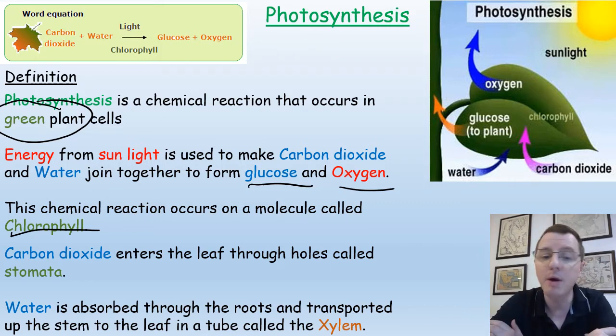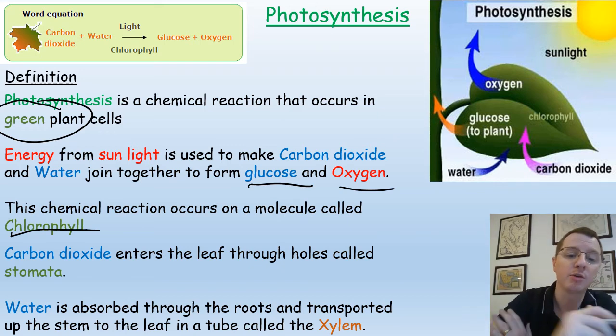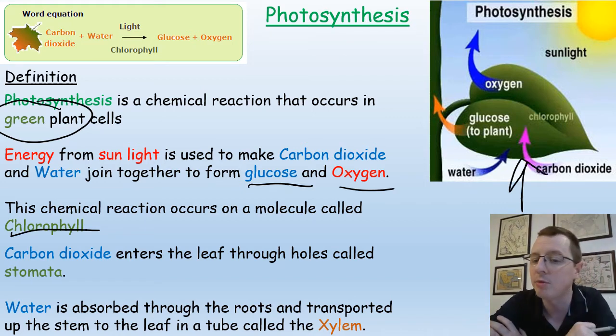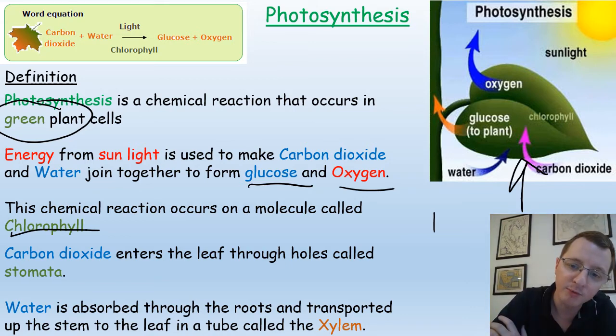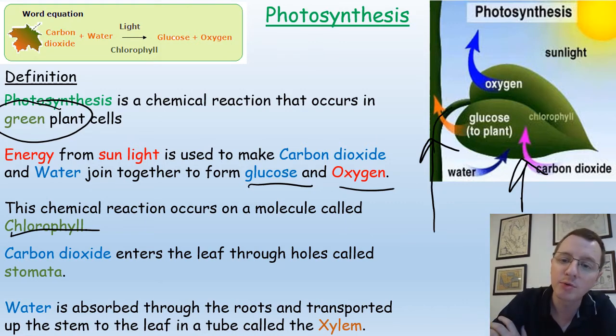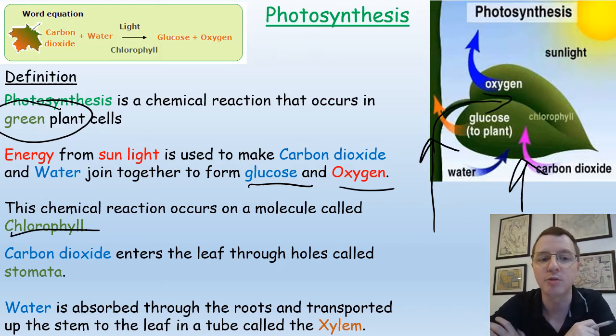So what about the actual gases then? How do they get in? How does water get into a plant? How does carbon dioxide get in? Well, carbon dioxide enters the plant through tiny little holes in the bottom of the leaf called stomata. Water is absorbed through the roots and then it's transported up through a set of tubes called xylem, and those tubes go all the way into the leaf structure itself.